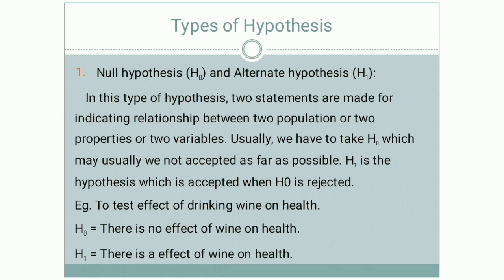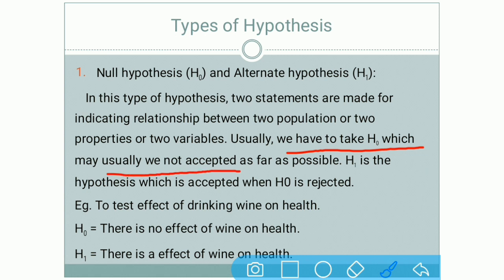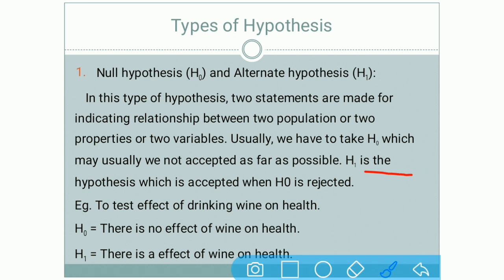Whenever we make any assumption, the null hypothesis H0 is one that we usually do not accept — 99% of the time it is made in a way that it will not be accepted. H1 is accepted when H0 is rejected. These two assumptions are made simultaneously, and when one statement is rejected, the other is automatically accepted.